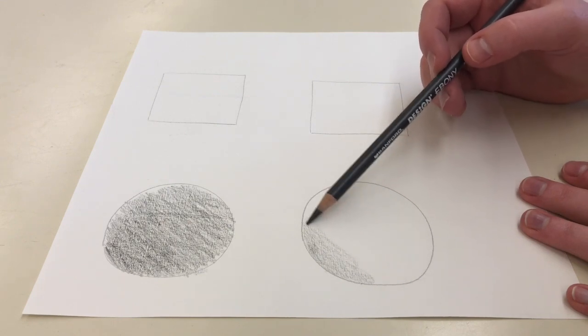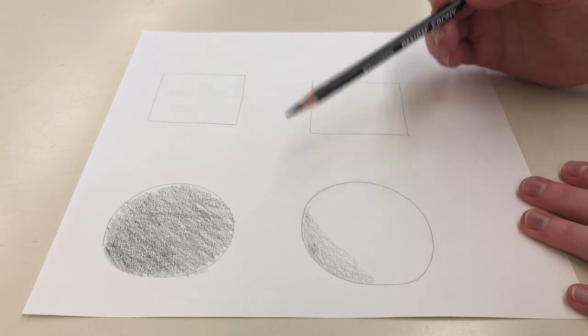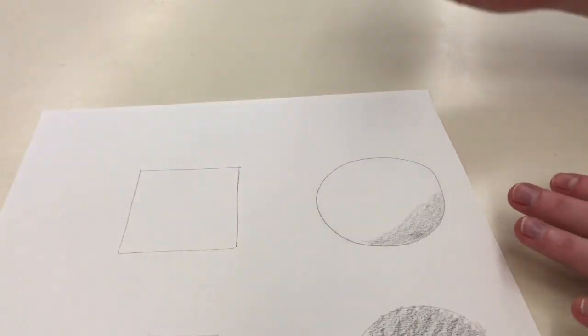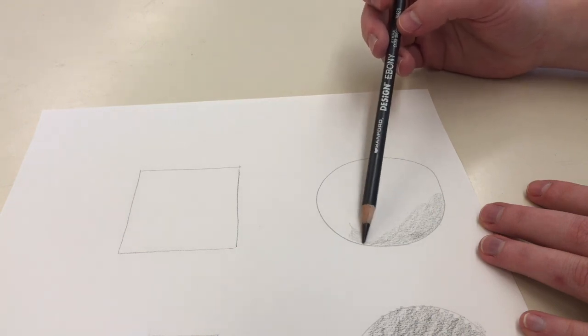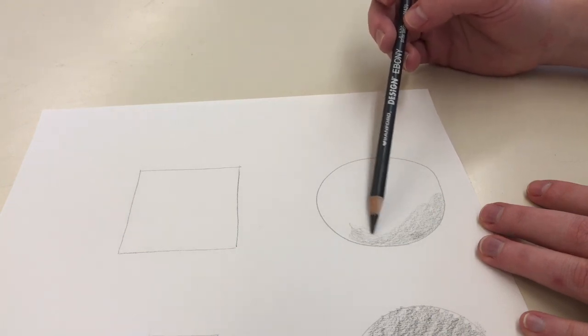Notice that I'm barely holding the pencil. I'm allowing the ebony pencil to rest in my fingertips while I move my wrist back and forth. By having a loose grip it allows me to have little pressure on the ebony pencil which creates the lightest value.